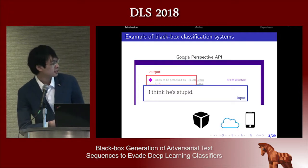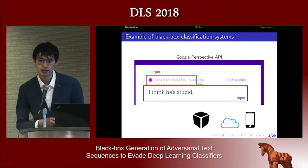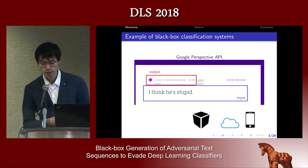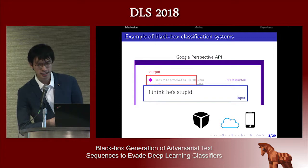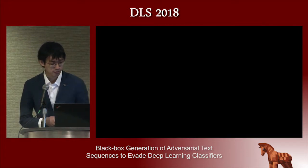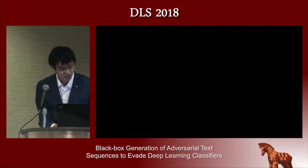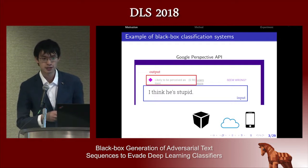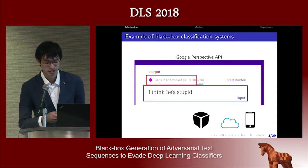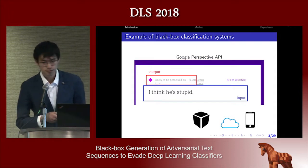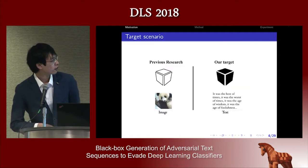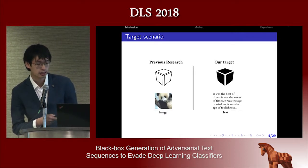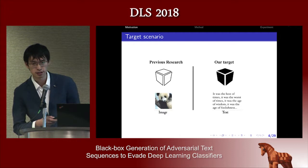It's becoming a growing trend for deep learning applications where these models are deployed on cloud servers and users can access them using mobile devices or terminal machines. So it's generally a black box setting, and it's becoming more and more popular. While previous research mostly focuses on the white box setting and image case, our work targets the black box setting and the text case.